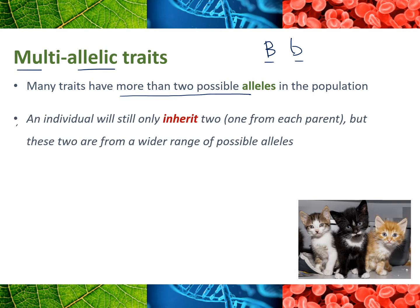It's really important to remember, though, we're talking about the fact that there could be multiple different alleles in the population. Each person will still only inherit two alleles. So a genotype will still only have two alleles in it. But instead of those alleles being either one thing or another thing, they could be any combination of perhaps five alleles.